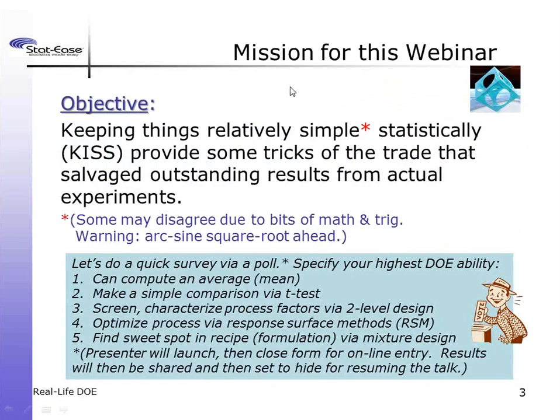The mission for this webinar is — while keeping things relatively simple statistically, which I call the KISS principle — to provide some tricks of the trade that salvage outstanding results from actual experiments. I gave this presentation at the ASQ World Congress back in 2002. I do have to warn you there are a few mathematical functions coming, including trigonometric functions like sine, arc sine, and square root. Hopefully I'll keep it simple.